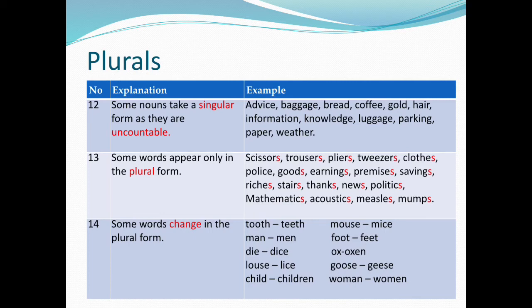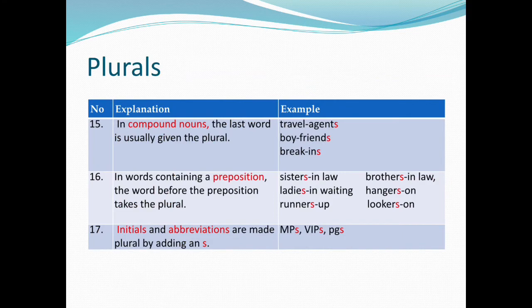13. Some words appear only in the plural form — scissors, trousers, pliers, tweezers, clothes, police, goods, earnings, premises, savings, riches, stairs, thanks, news, politics, mathematics, acoustics, measles, mumps. 14. Some words change in the plural form — tooth/teeth, man/men, die/dice, louse/lice, child/children, mouse/mice, foot/feet, ox/oxen, goose/geese, woman/women.